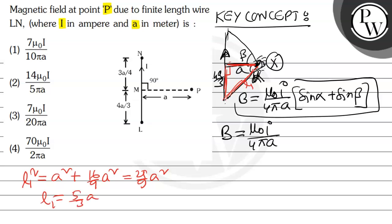Sin alpha is equal to perpendicular by hypotenuse. So this is 4a by 3 and hypotenuse is 5a by 3. So it will be 4 by 5.